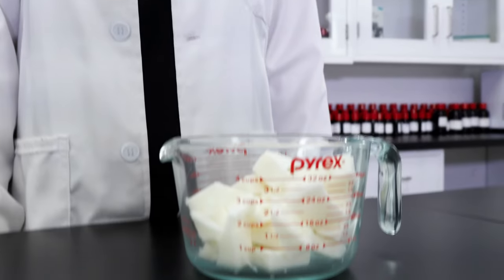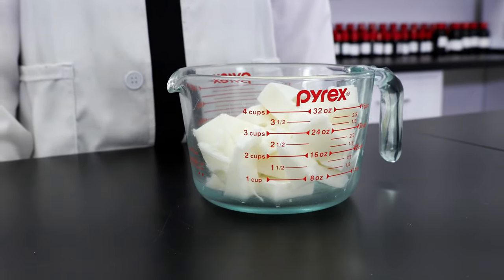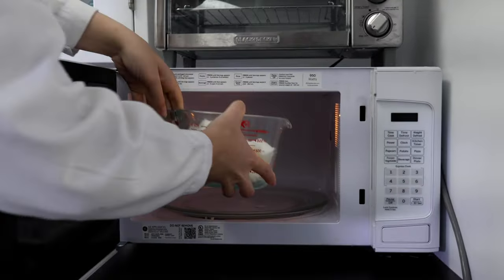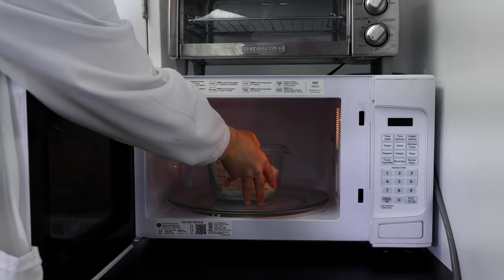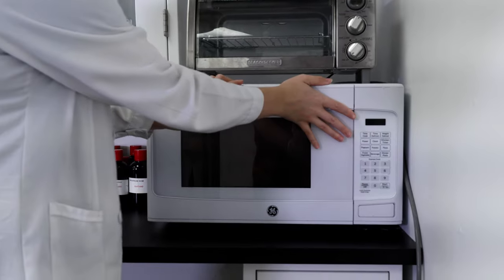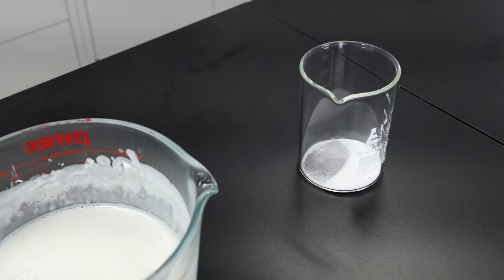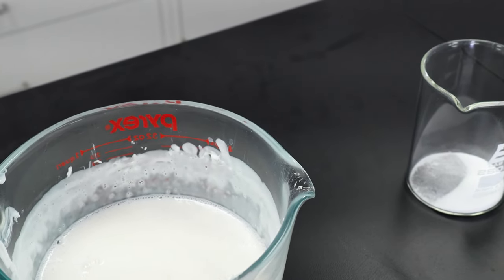Start by melting down your soap base. I'm using a goat's milk melt and pour soap that's detergent-free, which is great for sensitive skin. Make sure to cut it up into cubes so it melts more evenly. Pop it into the microwave for 30-second intervals and be careful not to let it boil or scorch. When your soap is fully melted, remove it from the microwave and you'll be ready for the next steps.